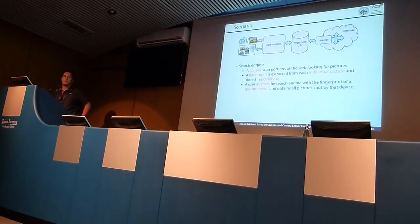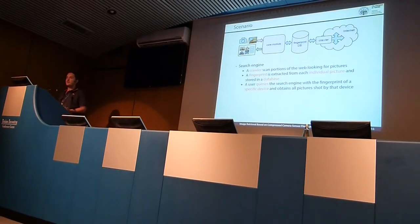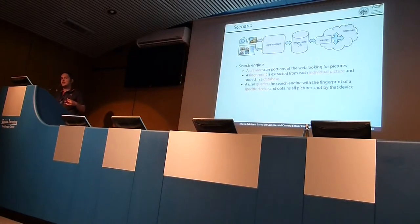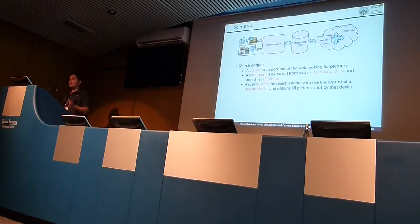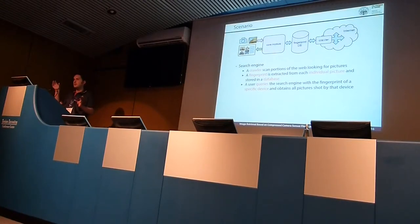The scenario we have in mind is like a search engine for cameras. We assume we have a crawler program that searches the internet for pictures, categorizes them, and for each picture extracts the PRNU fingerprint and stores it in a dataset together with a link to that specific picture, such as a URL. We then have a query model that receives as input a fingerprint of a given camera, and searches the dataset for every picture taken by that specific camera by comparing the query fingerprint with fingerprints in the dataset.